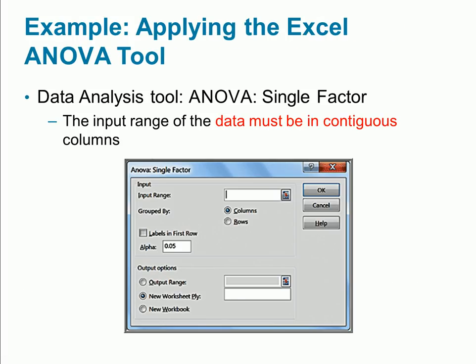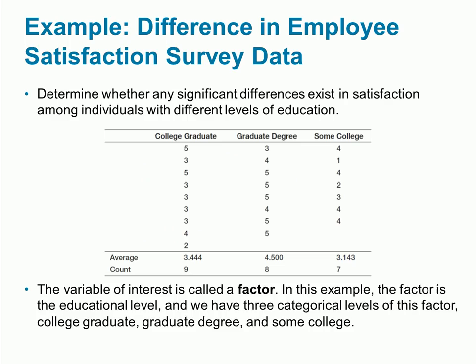We can use the data analysis tool pack for ANOVA using Excel. We're going to use the single factor because the only factor I'm considering is the education level. You need to be cautious when selecting the data—the columns need to be adjacent to each other. If you put an empty column between them, the analysis will fail.